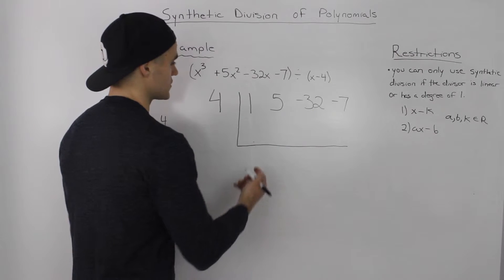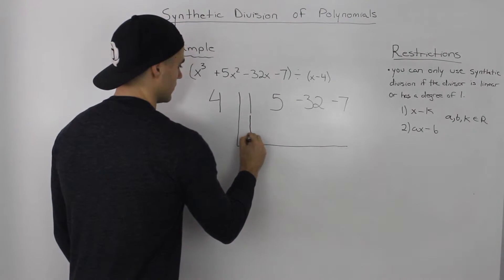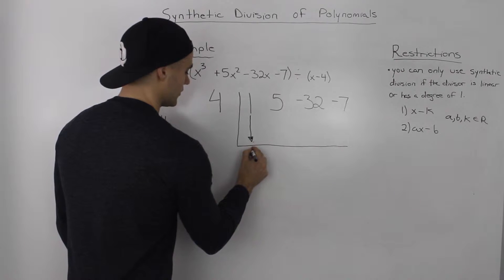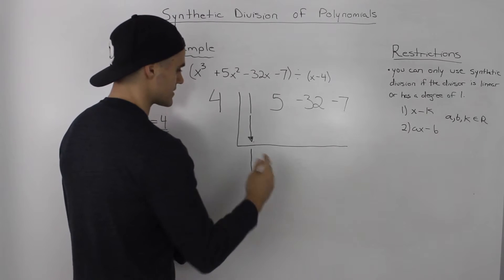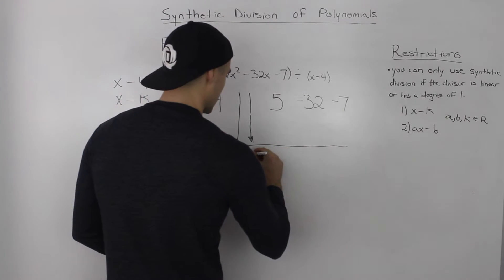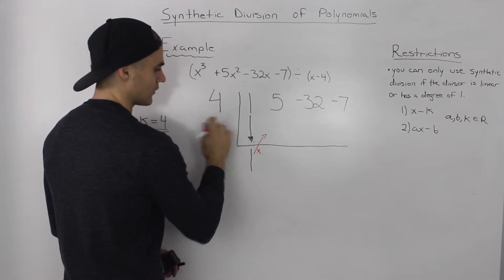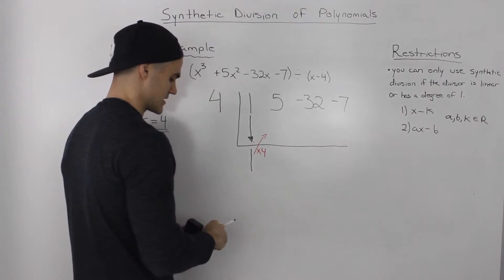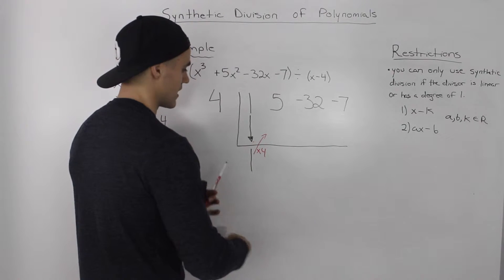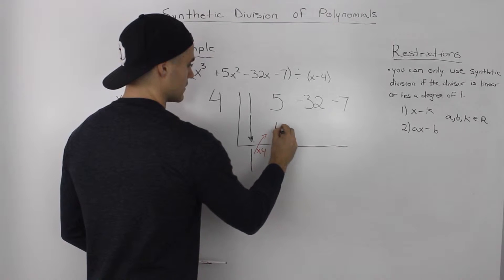So the first thing you always do is you bring this first term down. So under the line, we would write 1. And the next step is you take this term that you have here, and you multiply it by the K value of 4, or whatever your K value is in your particular case. So 1 times 4 gives us 4.